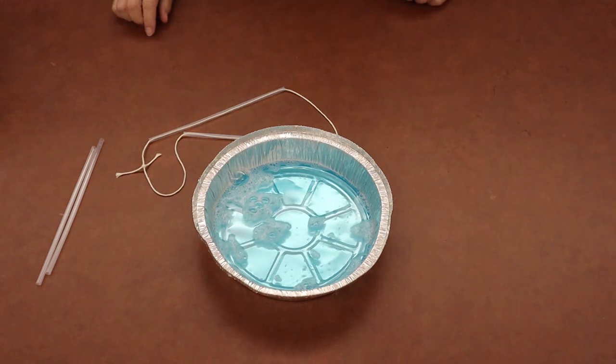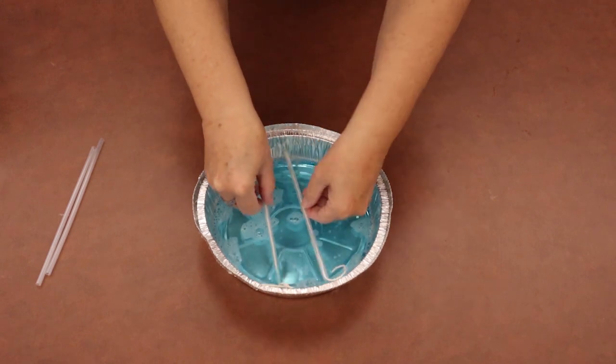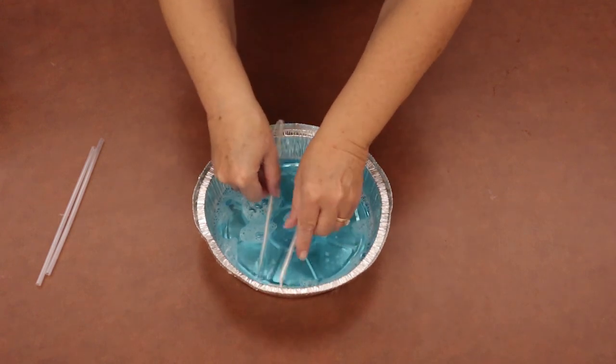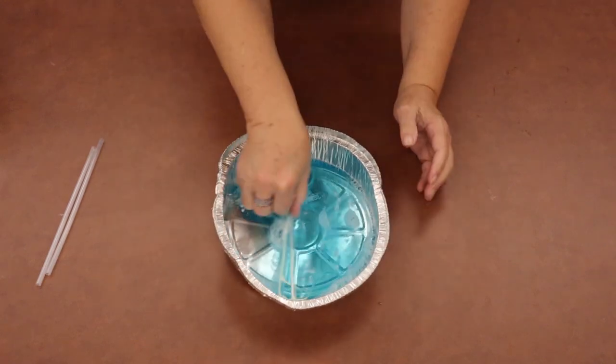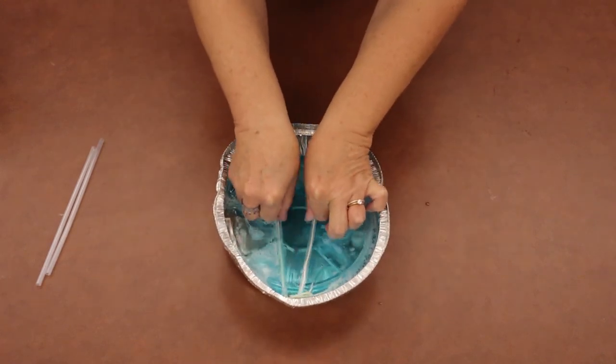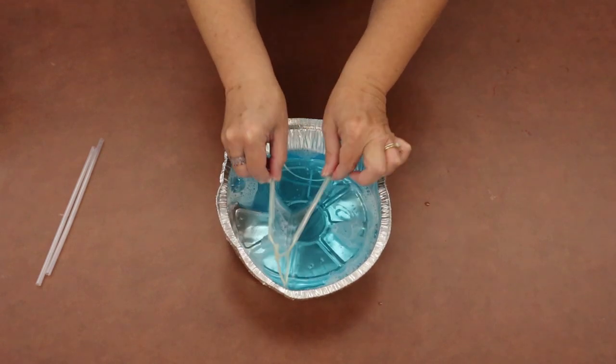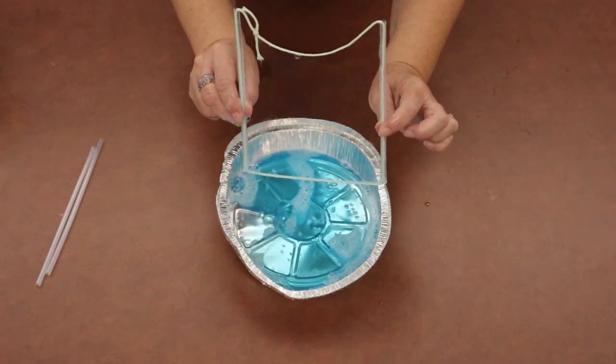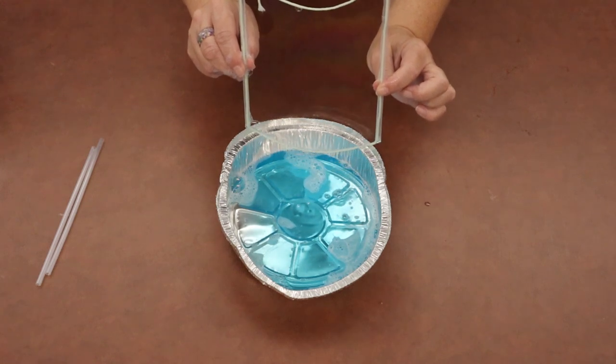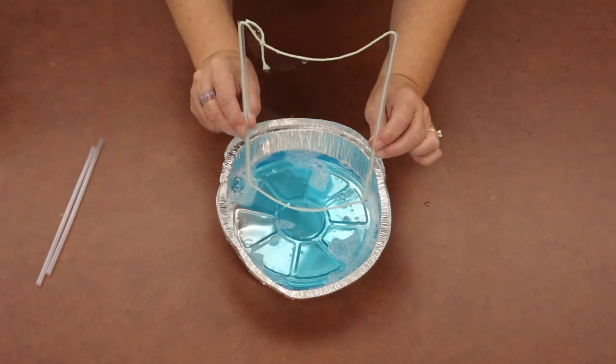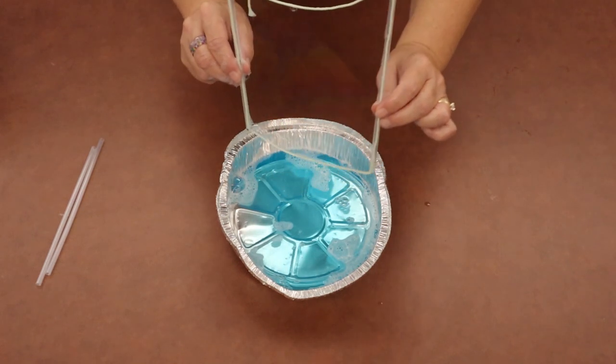Then you'll take your straw and your string and you'll put it in the pan and make sure the straws and the string are in there. If you have to mold your pan so they fit in there, you can do that and get everything wet. Then when you pull it up, you should see a film clinging to the string and the straw. Then you can either blow that or you can move your wand around and try to get a bubble to come out.